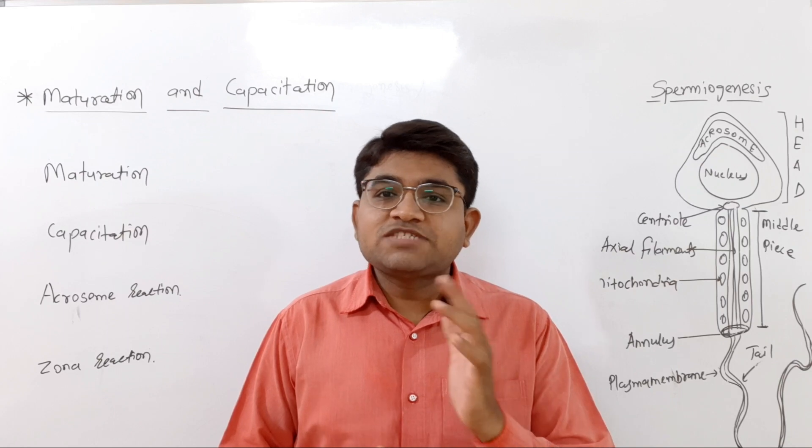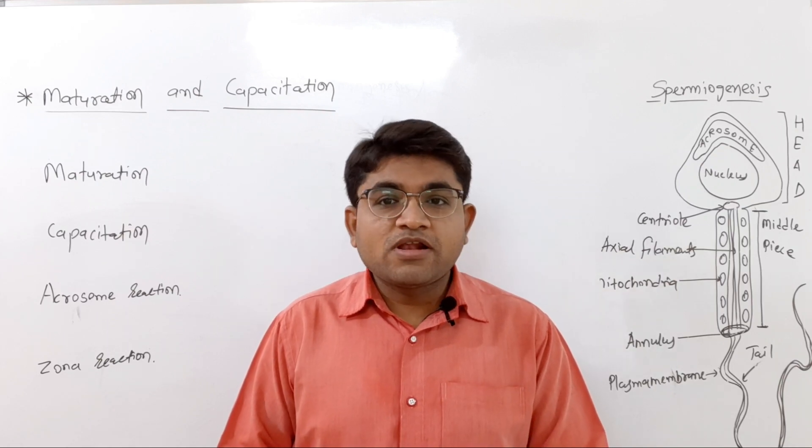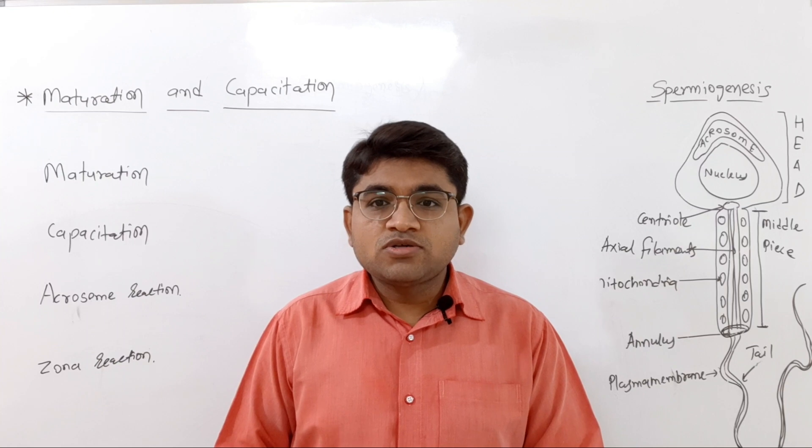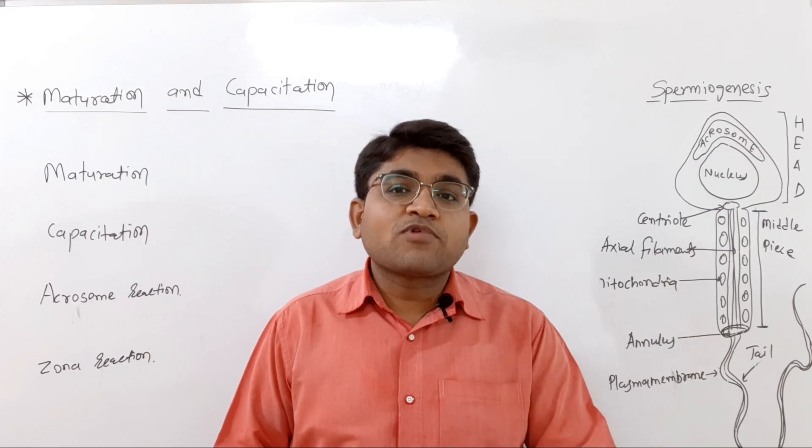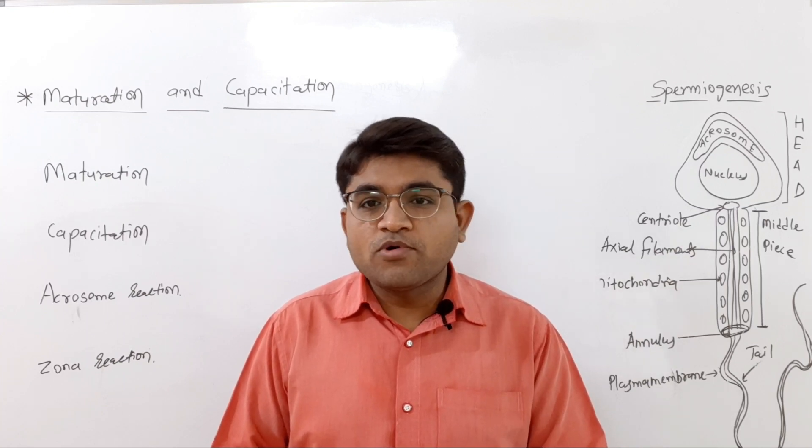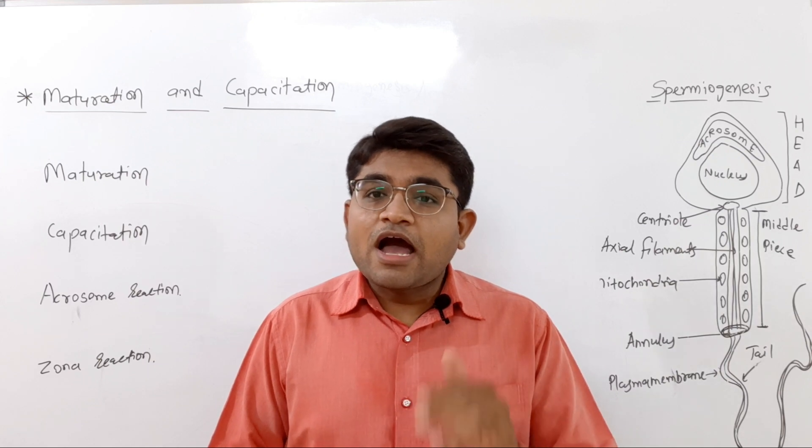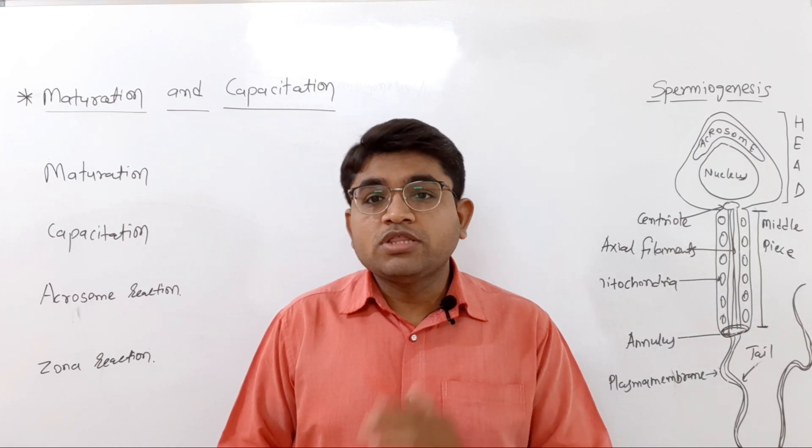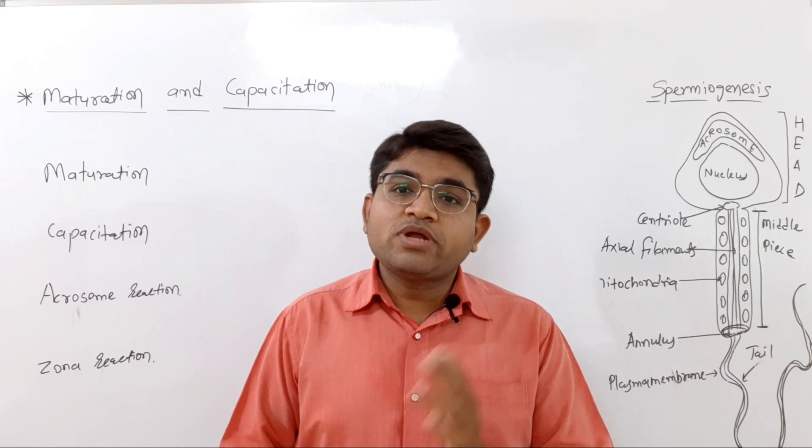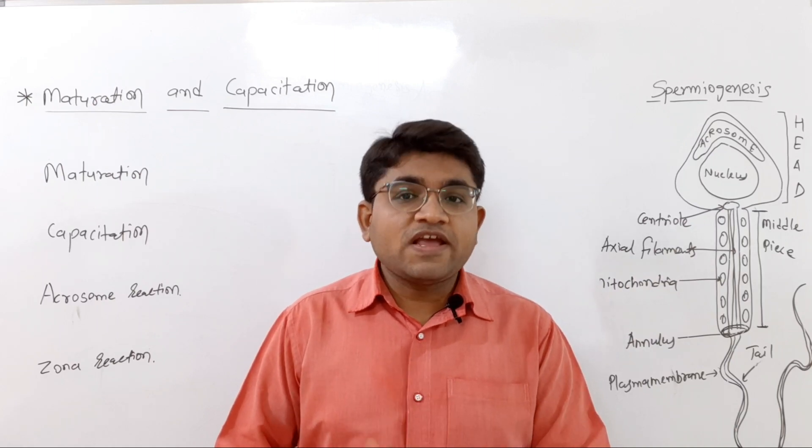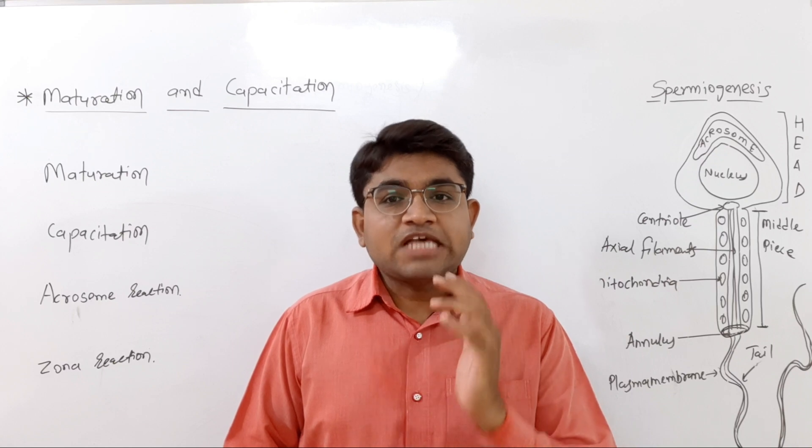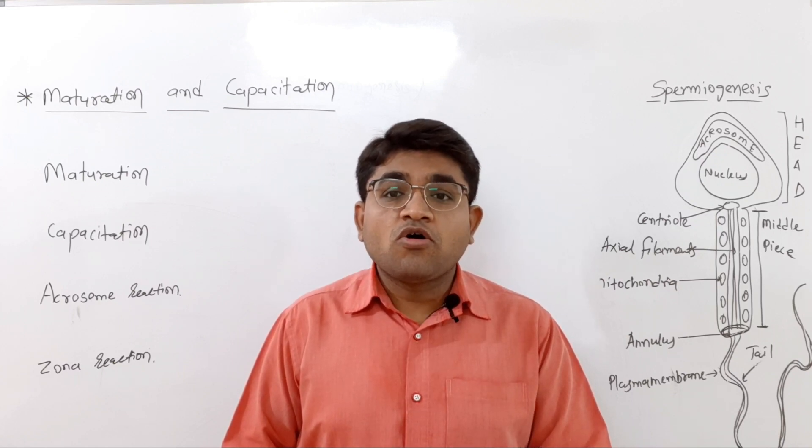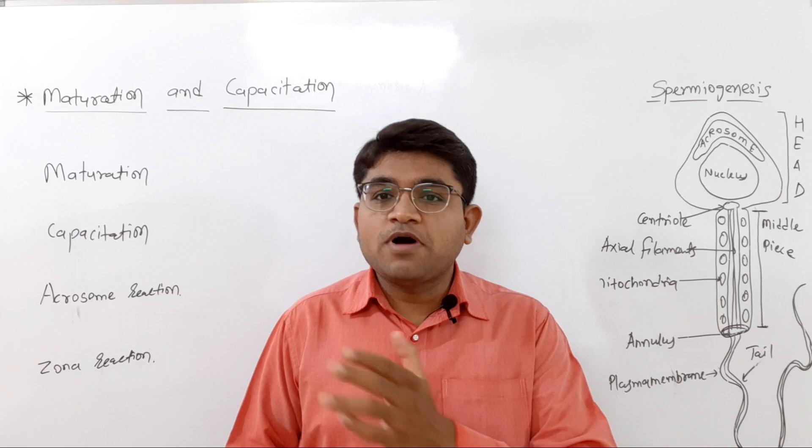But these sperm are also not capable for the fertilization process, so the capacitation process is most important. After ejaculation, when the sperm reach the uterus, there is an alteration in the seminal proteins and the glycoproteins on the surface of the sperm.